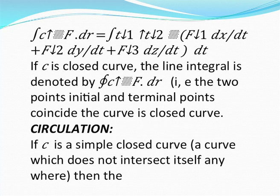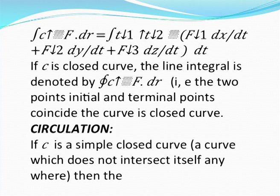Circulation: if c is a simple closed curve, the line integral of f-bar around c is called the circulation of f-bar about c, denoted by the integral over c of f-bar dot dr equals the integral over c of f1 dx plus f2 dy plus f3 dz. If the integral over c of f-bar dot dr equals 0, then f-bar is called irrotational.